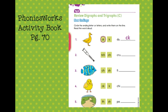Now it's time to do our activity on page 70 found in the Phonics Works Activity Book. For this activity, students will be reviewing the digraph and trigraph endings in each of the words. Pause this lesson to complete this activity.